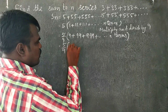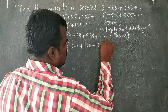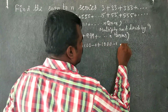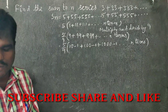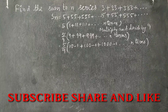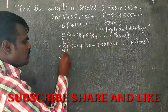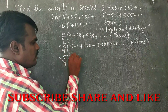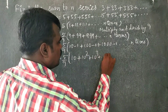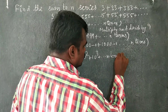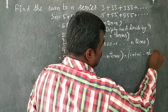So equal to 5 by 9, then we write 9 as 10 minus 1, 99 as 100 minus 1, and 999 as 1000 minus 1, and so on for n terms. Expanding gives 5 by 9 times the quantity 10 plus 10 squared plus 10 cubed for n terms, minus 1 plus 1 plus 1 for n terms, which equals minus n.